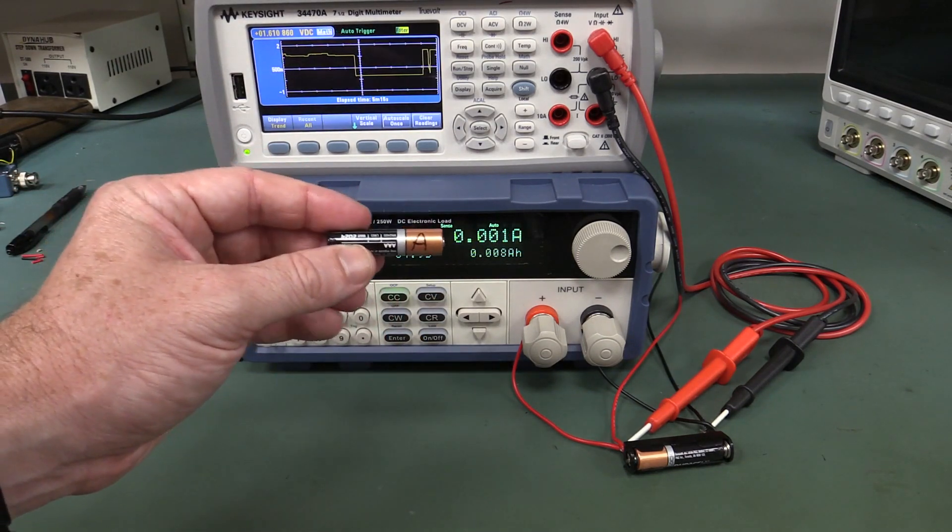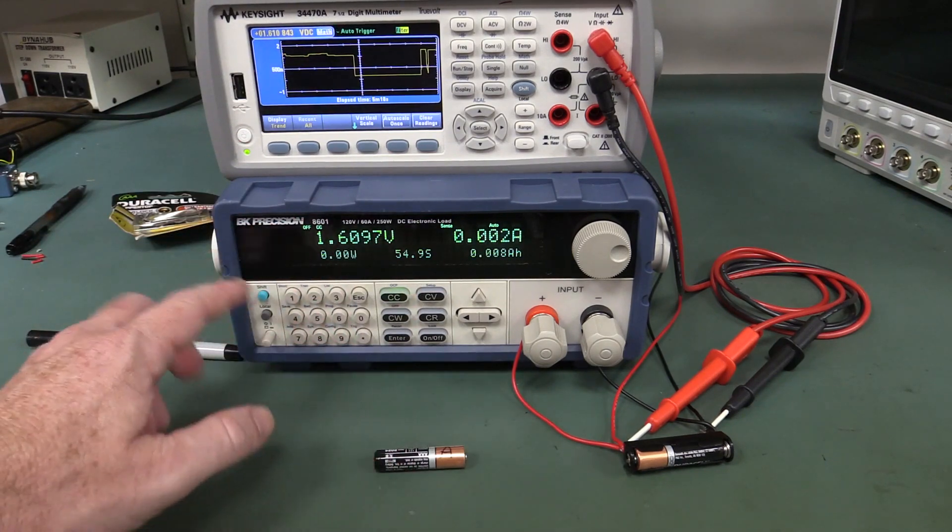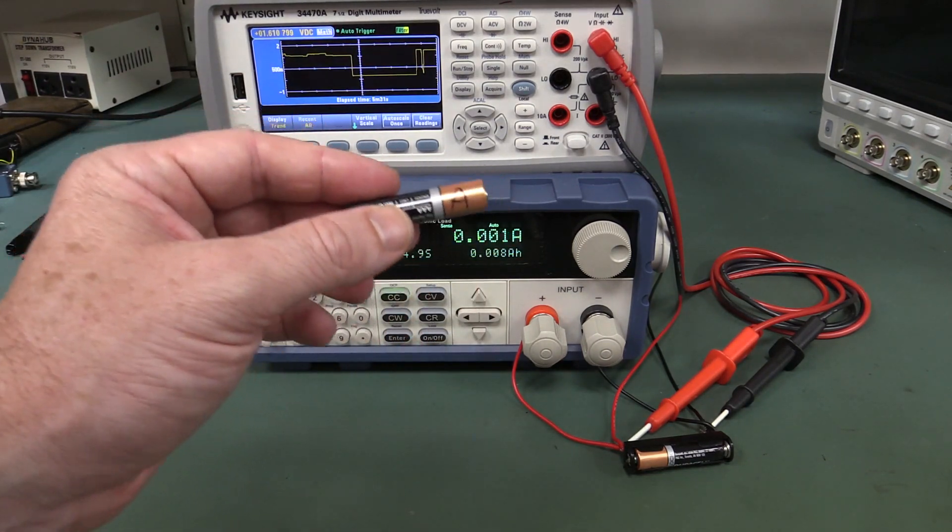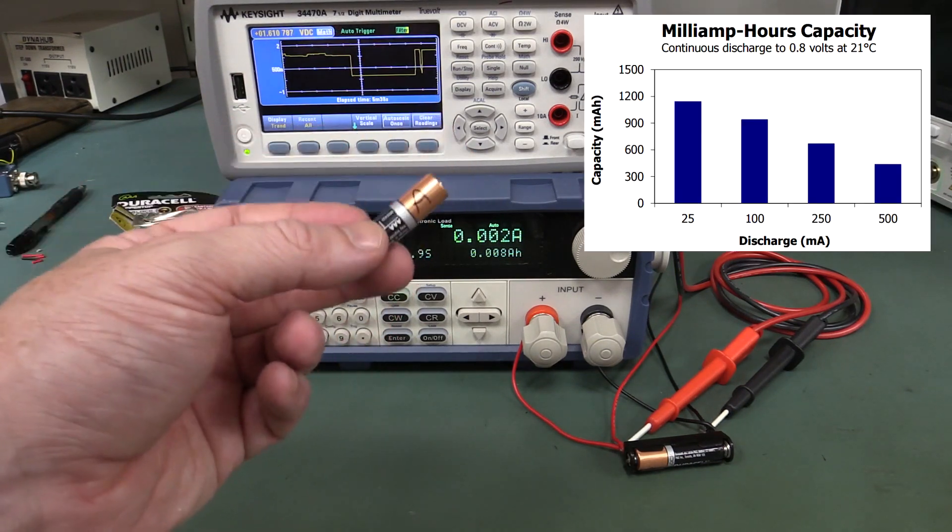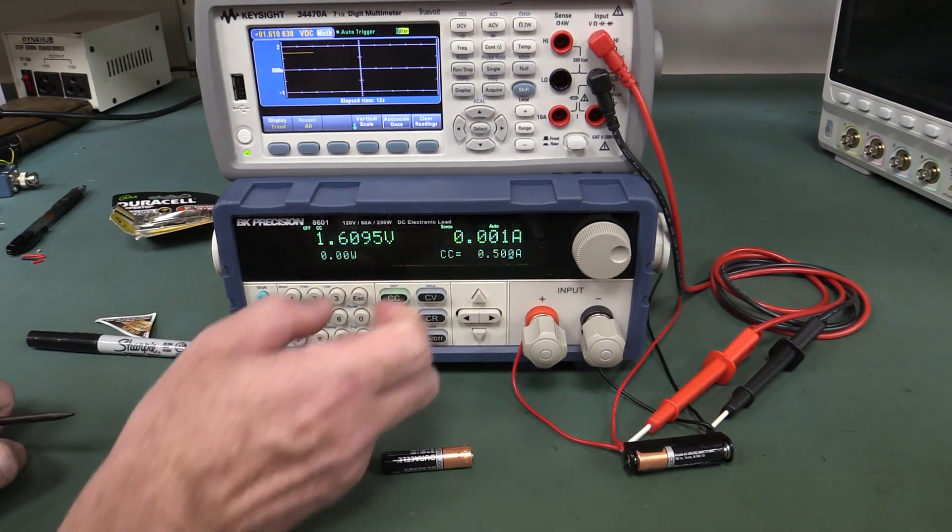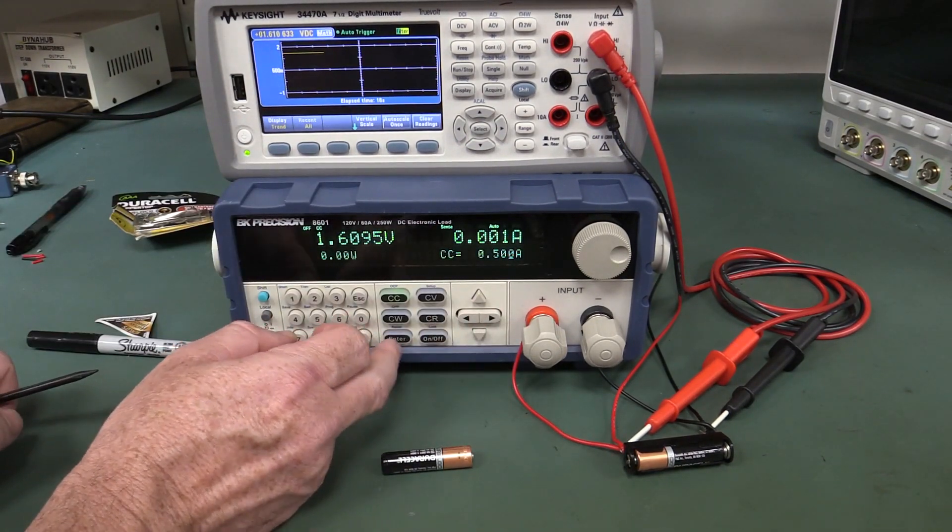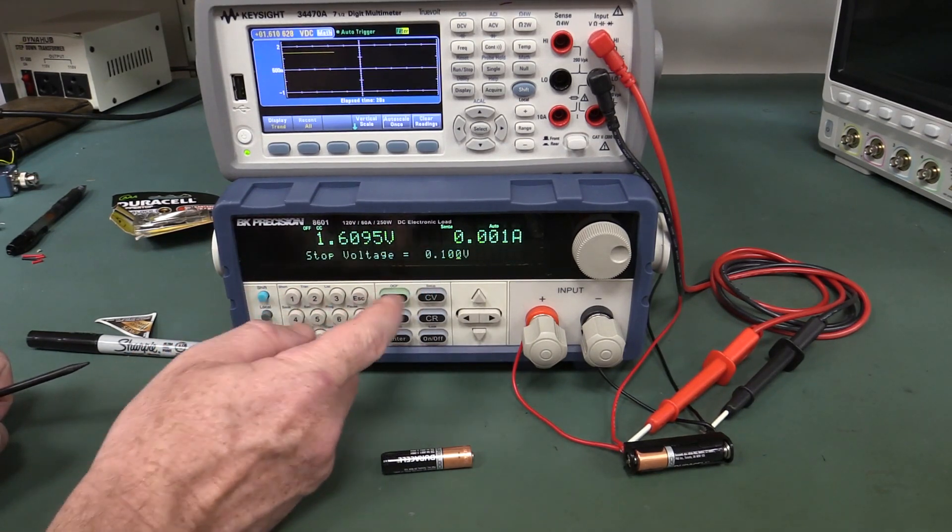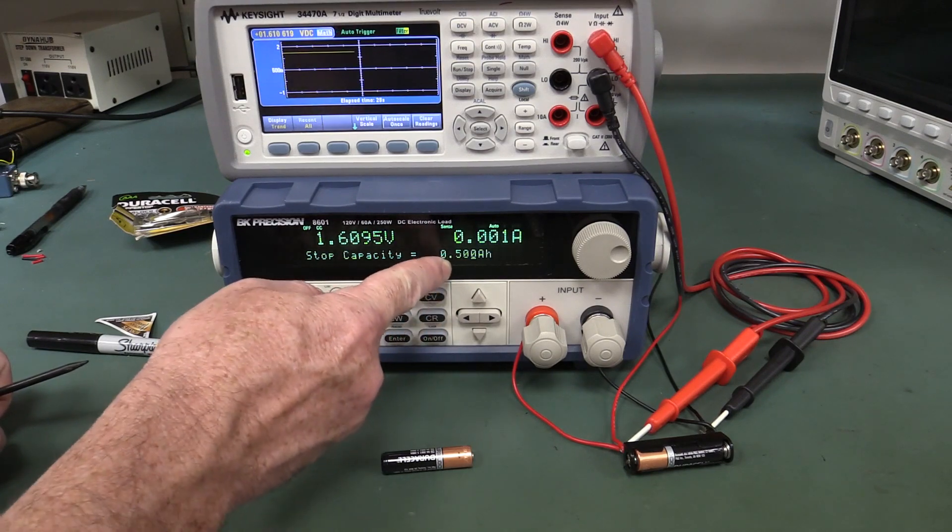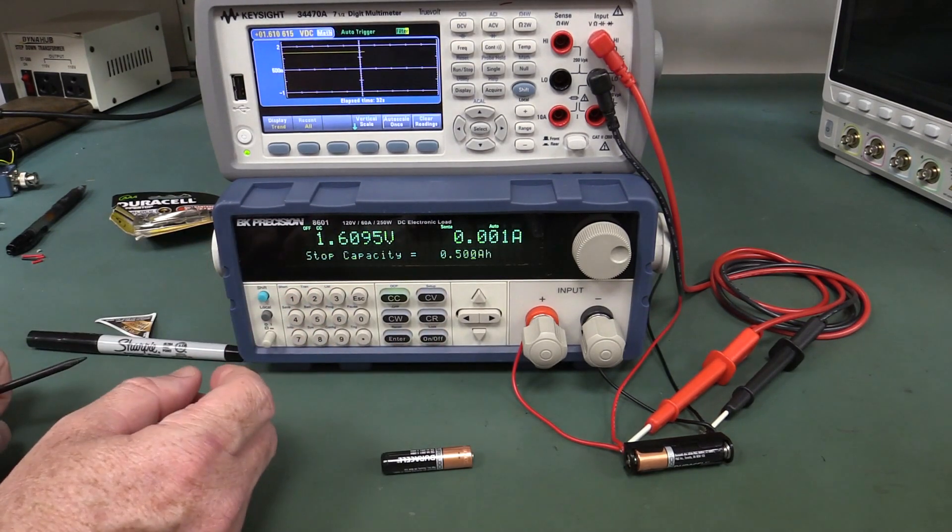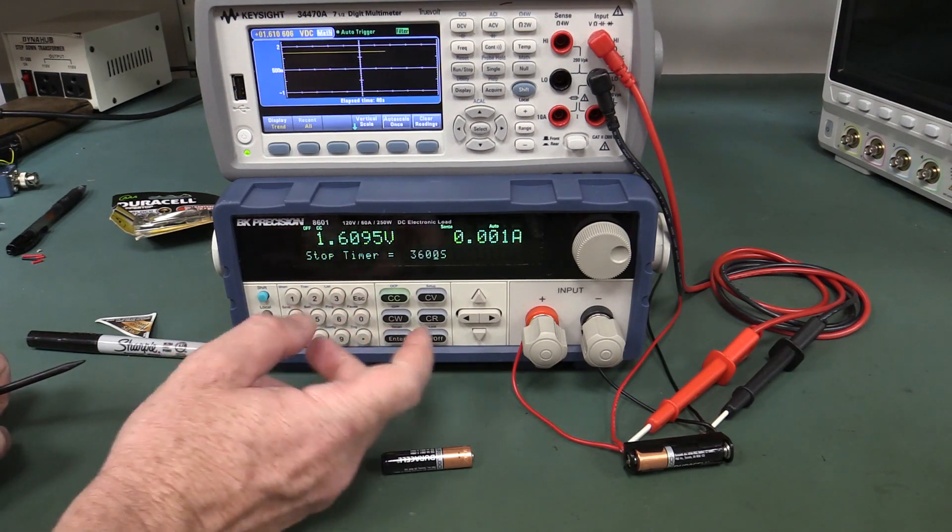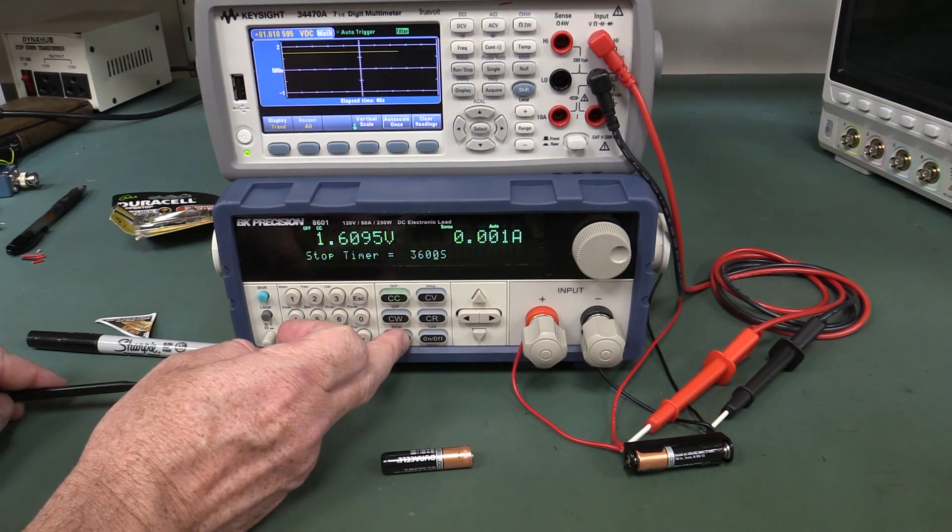I'm going to discharge these at half an amp for an hour, so 500 milliamps constant current discharge. I'm going to use my BK precision electronic load to extract 500 milliamp hours from these things. That's a high current for a AAA, they're rated for about 500 or 600 milliamp hours capacity, so pretty much draining these fairly well.